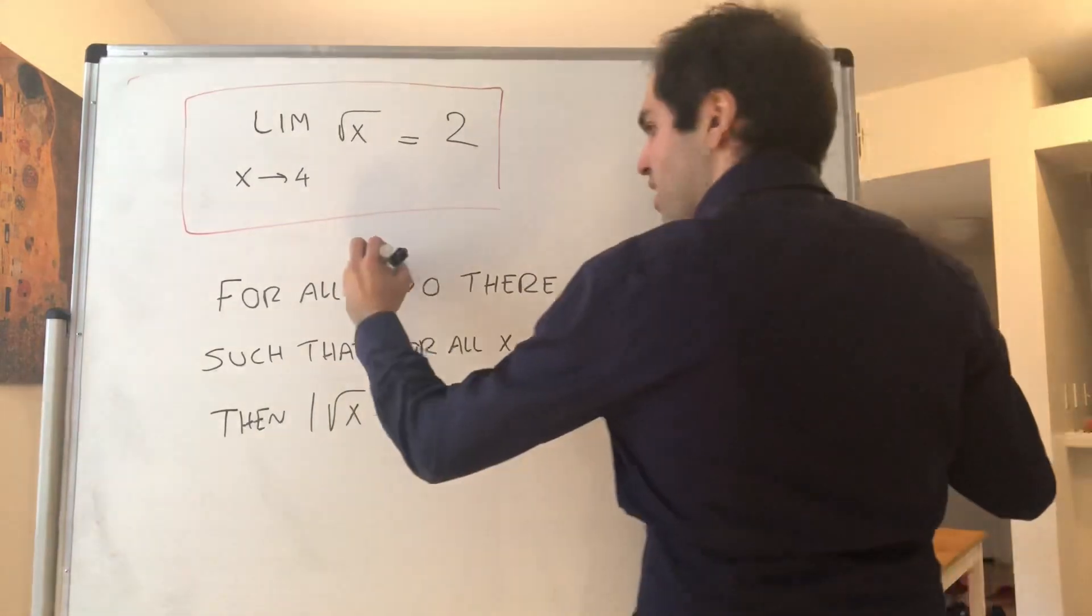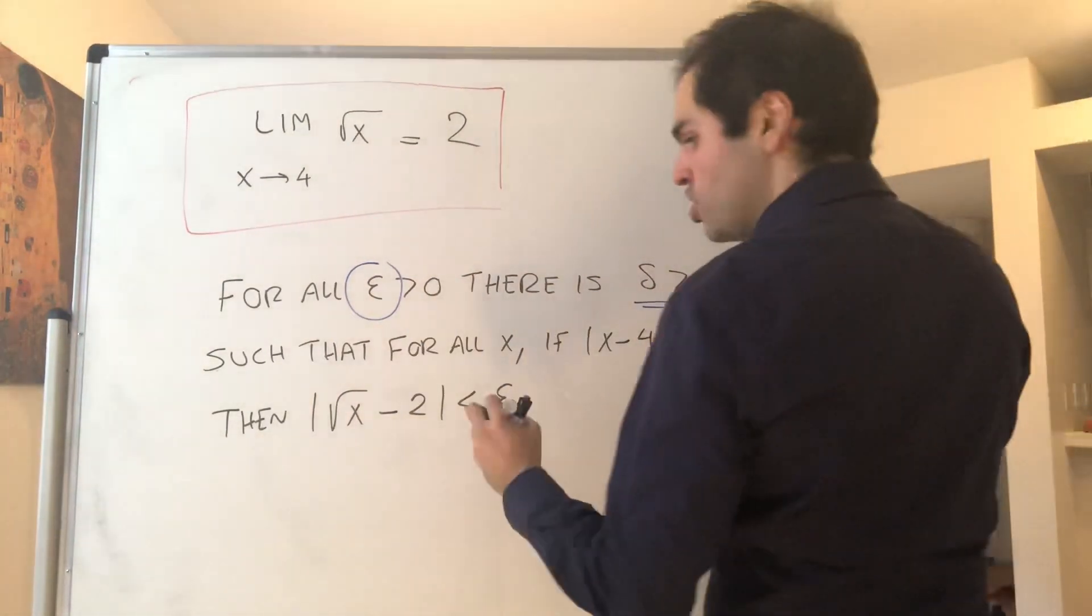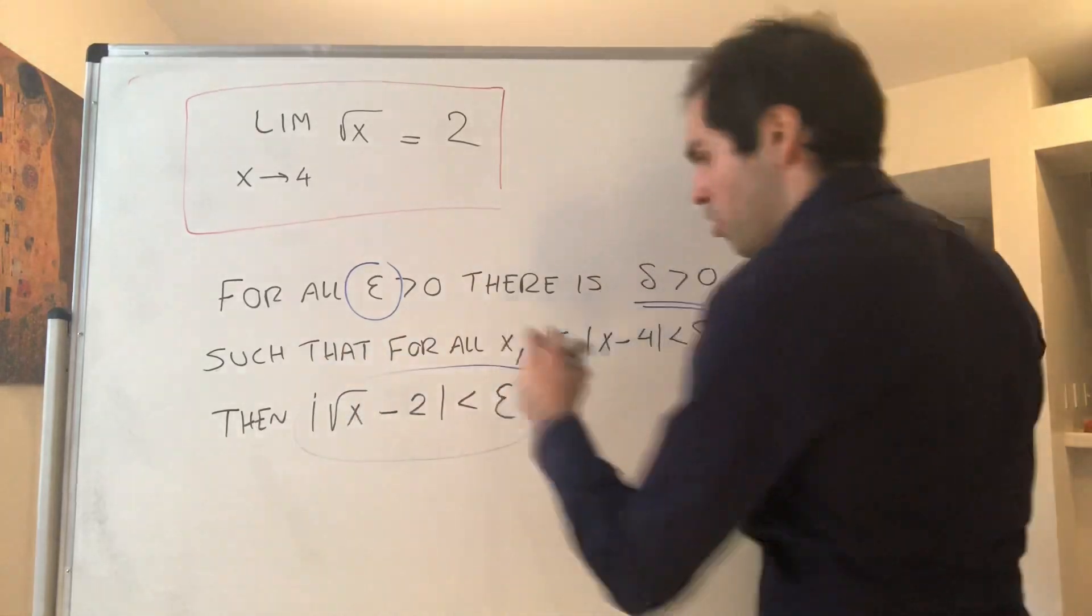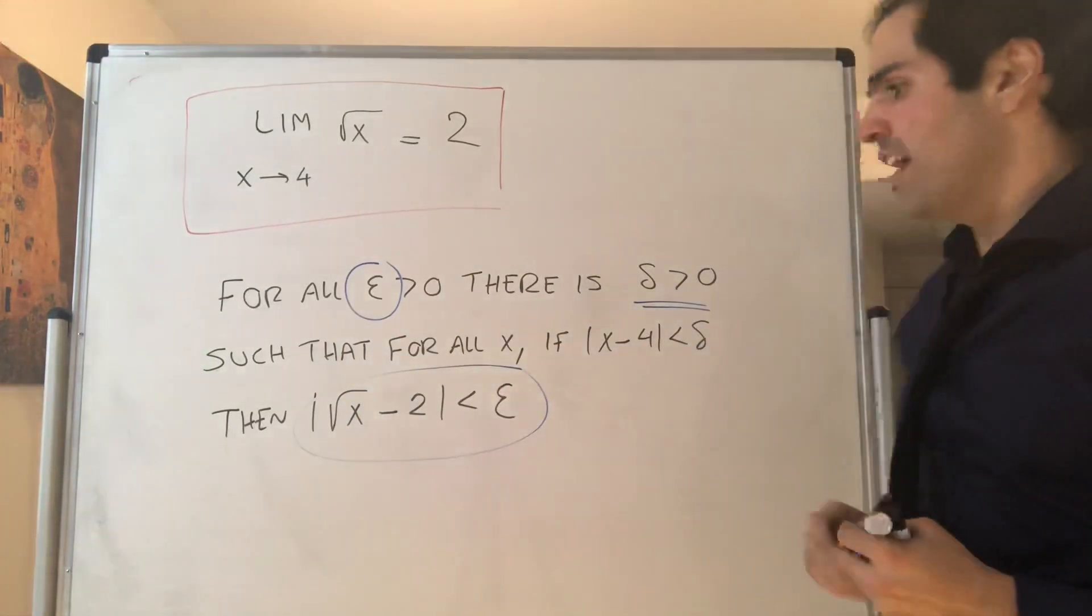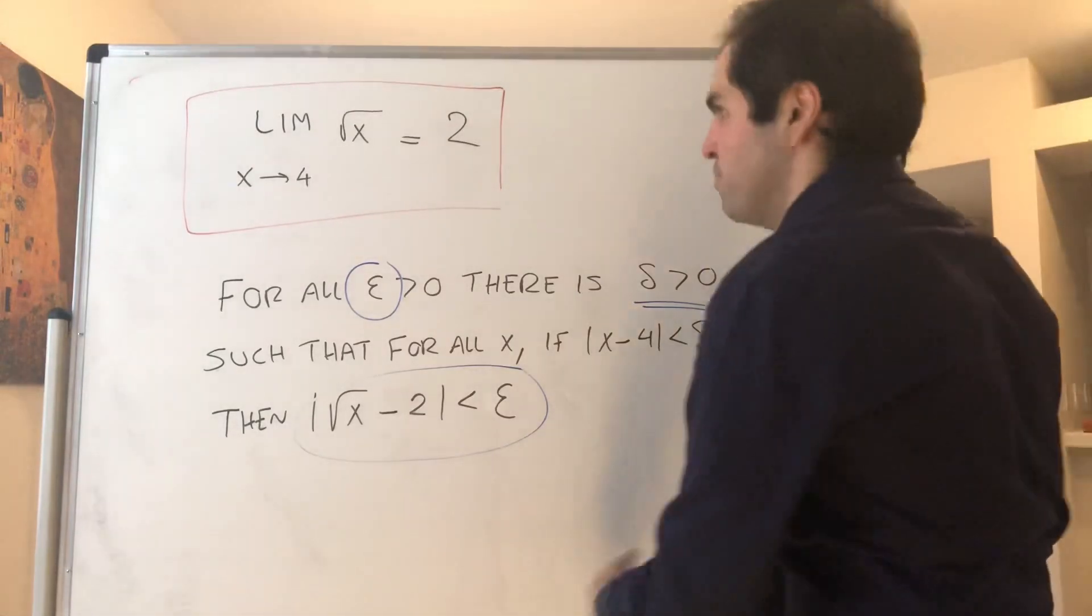Given epsilon, we will find a delta such that eventually this is true. So let's start paradoxically with square root of x minus 2 is less than epsilon.